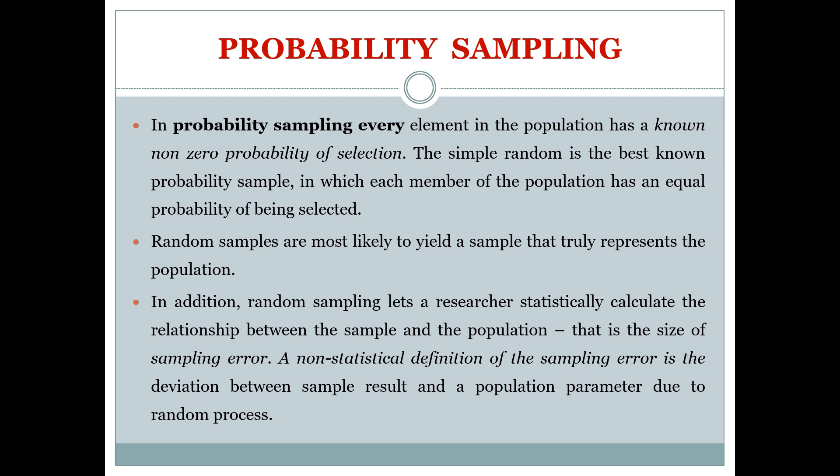There are two types of sampling: probability and non-probability sampling. In probability sampling, every element in the population has a known, non-zero probability of selection — sometimes all elements have equal chances of being selected. The simple random sample is the best known probability sample, in which each member of the population has an equal probability of being selected.